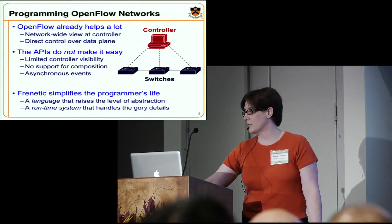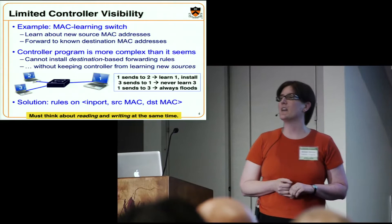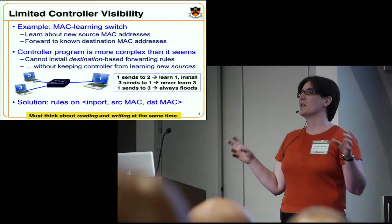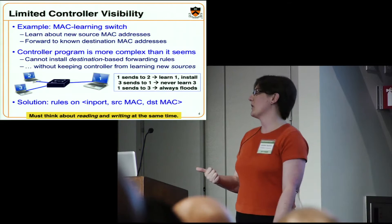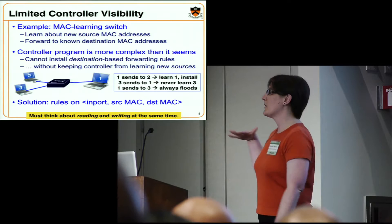Frenetic is going to be a language that raises the level of abstraction by addressing these three issues. Our runtime system handles all the gory details so that you don't have to sacrifice performance to get those abstraction benefits. I'm going to go through three examples of those three problems and show you why we need to raise the level of abstraction. The sort of hello world of OpenFlow is to write a MAC learning switch — people have probably looked at PySwitch and seen how you implement something like that.